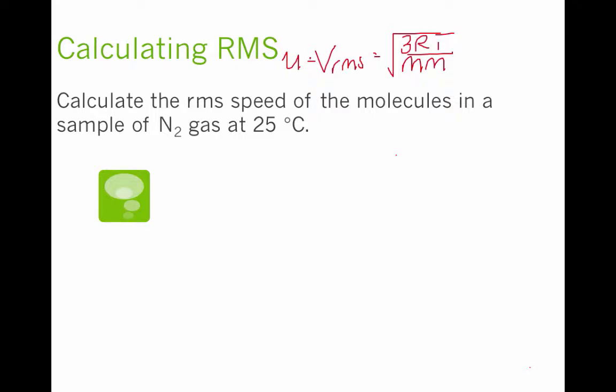Some important things to know here is that R, the R that we use is 8.314 joules over mole Kelvin. So this is the energy R. We use the energy R here because velocity is related to the joule. When we are doing any root mean squared calculation, the R has to be the 8.314, and your molar mass has to be in kilograms. That's going to be super important, so make sure you have that written down.